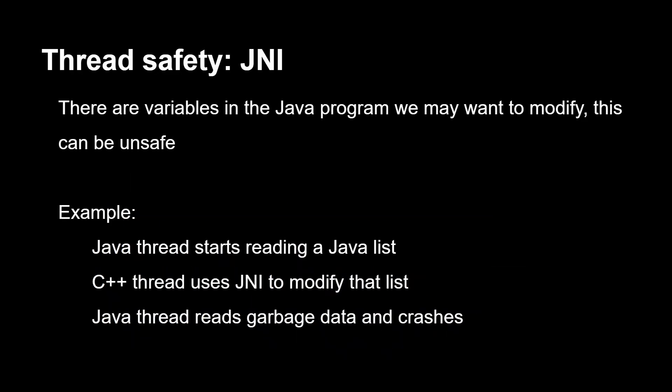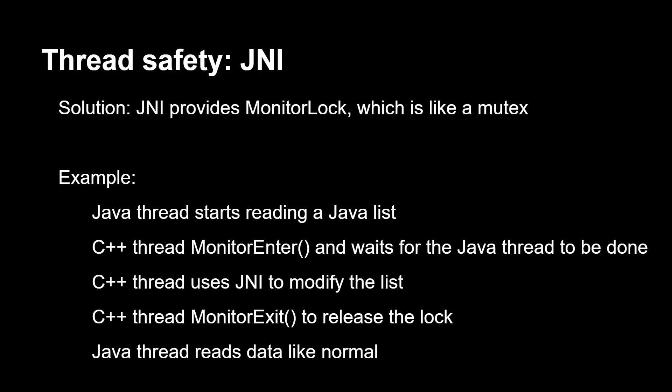There is, however, a different way to crash, and that is with JNI, because the Java program has its own Java threads and we can't really share a mutex between the Java thread and our C++ thread. This is fixed with JNI providing monitor lock, which is like a mutex — it's one of the JVM mutexes. You just do a monitor enter and then a monitor exit. Do that before accessing something like a list, and that should fix any crashes you might be having.